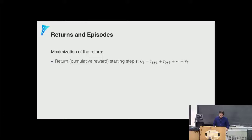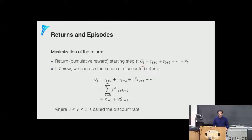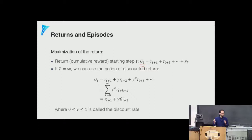We introduce the return G_t, or cumulative reward starting at step t, which consists of forward-looking rewards from the current step onwards. If the horizon is infinite, we introduce the discounted return where every future reward is discounted by a factor gamma, imposing exponential discounting. This says that rewards obtained further in the future are less important than immediate rewards, and it softly imposes a finite horizon on the MDP.